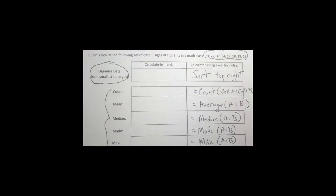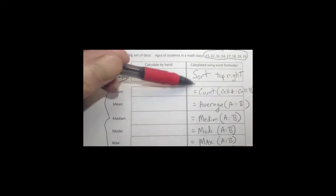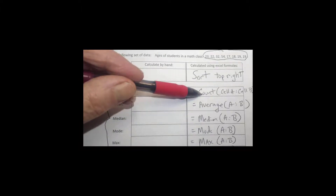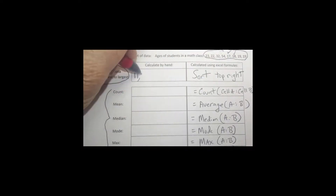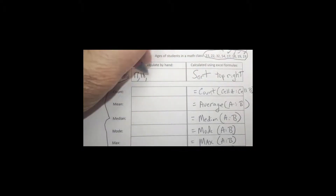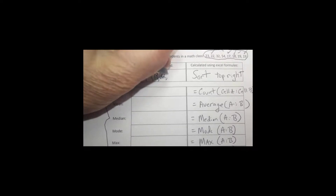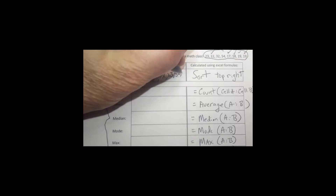Let's look at these descriptive statistics. First, we're going to organize the data from largest to smallest. The data we have is the age of students in the classroom. We do this because statistics like the median require the data to be in order. The smallest number is 17, then one 18, two at 19, one at 22, one at 23, one at 32, and one at 54.